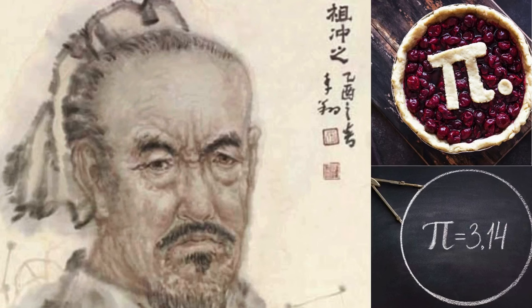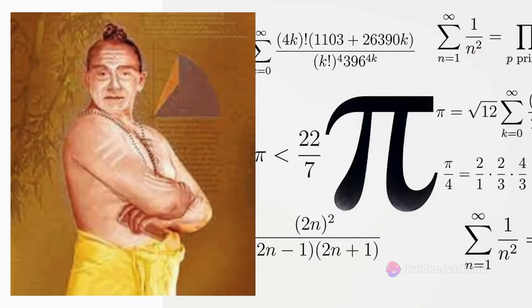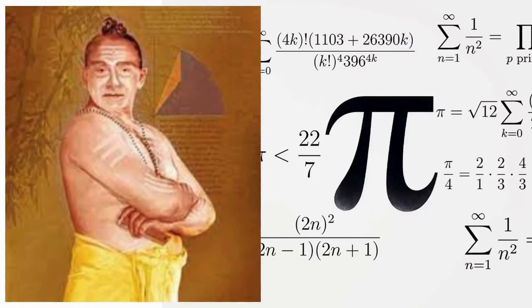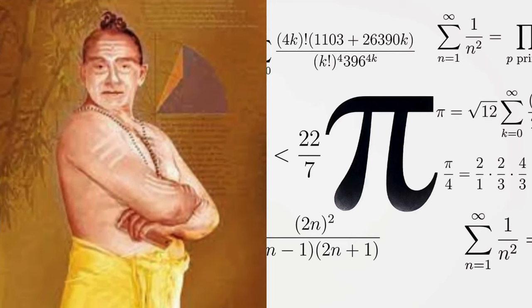The first known calculation of pie was done by the Babylonians in the second millennium BC. The Chinese mathematician Liu Hui calculated pie to seven decimal places in the third century AD. The Indian mathematician Madhava calculated pie to 39 decimal places in the fourteenth century AD.